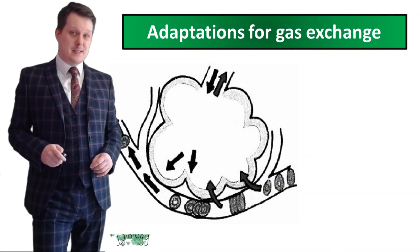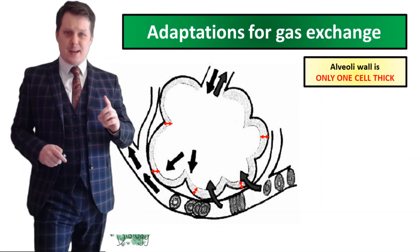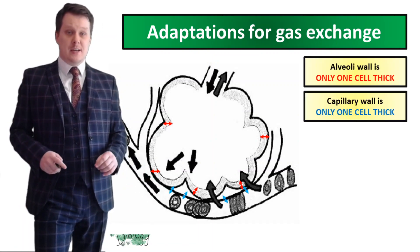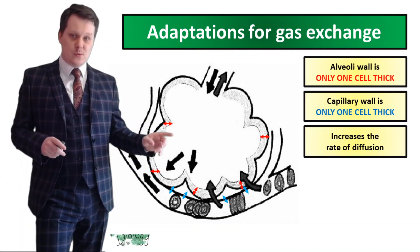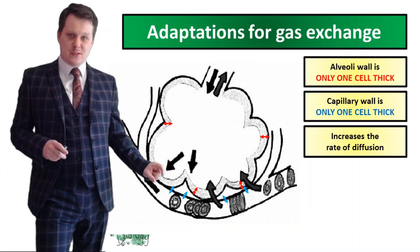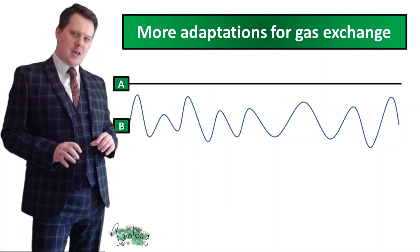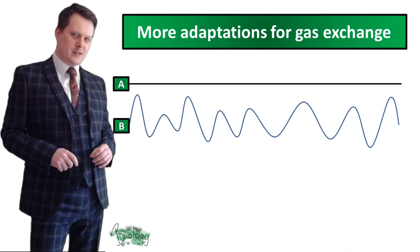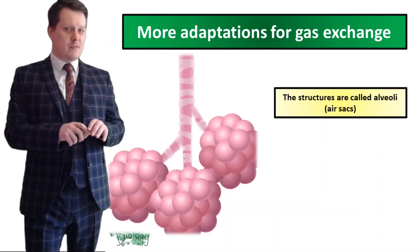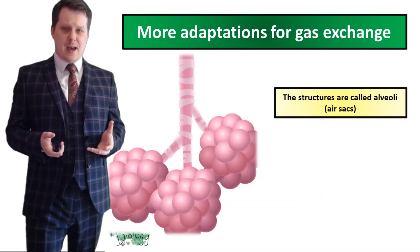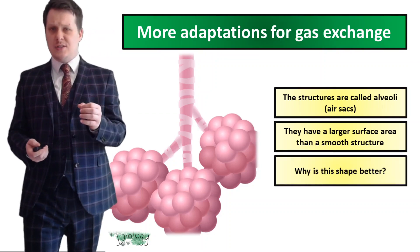The lung is really well adapted for gas exchange. The wall of the alveoli is only one cell thick, and the wall of the capillary blood vessel is also only one cell thick. This increases the rate at which the gases can diffuse because they have the smallest distance to travel. There is one more adaptation — the shape of the alveoli. Imagine two pieces of string: one straight, one wavy — B is longer when stretched out. The alveoli are shaped like a bunch of grapes, which increases their surface area, and a larger surface area increases the rate of diffusion.